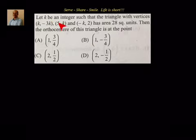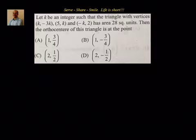Let k be an integer such that the triangle with vertices (k, -3k), (5, k) and (-k, 2) has area 28 square units. Then what are the coordinates of the orthocenter of this triangle?